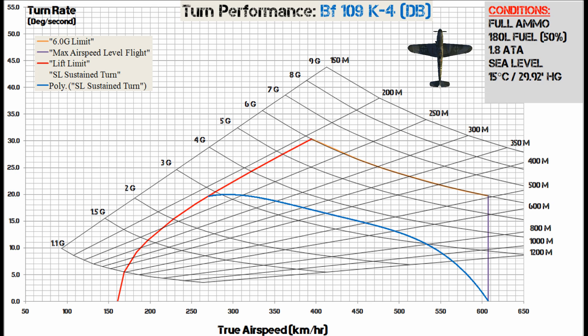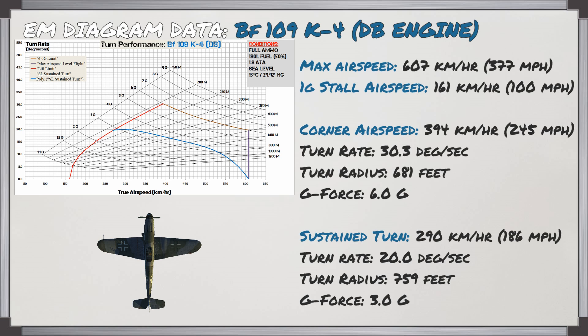Here's the EM diagram for the BF-109K4 using the standard DB engine. Here are the highlights with the important data pulled directly from the graph. In a few moments, we're going to look at these two graphs overlaid on top of each other to examine the relative performance.